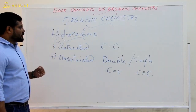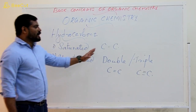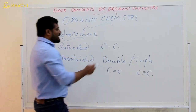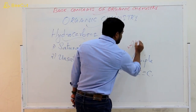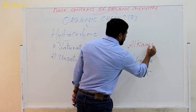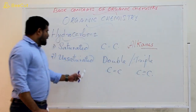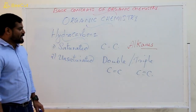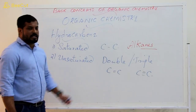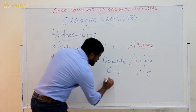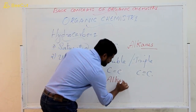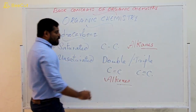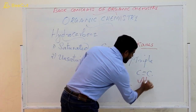In the case of saturated hydrocarbons, carbon-carbon single bond exists — these are known as alkanes. In unsaturated hydrocarbons, carbon-carbon multiple bonds exist. If a carbon-carbon double bond exists, it is known as alkenes. And if a carbon-carbon triple bond exists, it is known as alkynes.